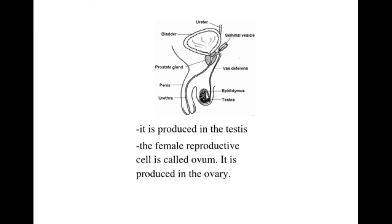When you look at the sperm, it has a part we call the tail and a part called the head. The head contains the nucleus, which is the living part of the cell. The tail helps the sperm to move. Once the sperms are released by the penis, they are introduced to the female reproductive organ.